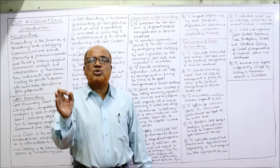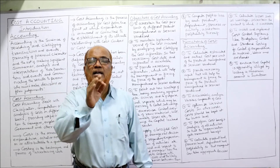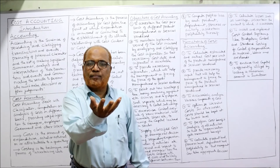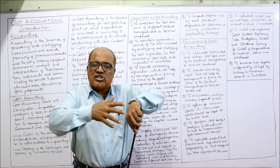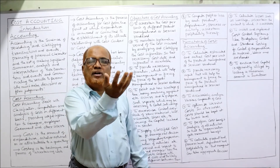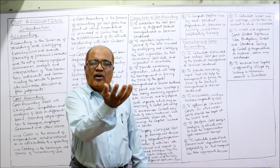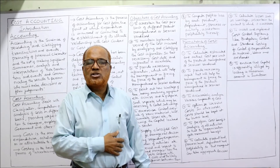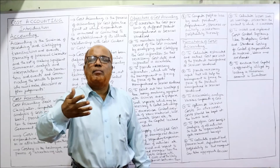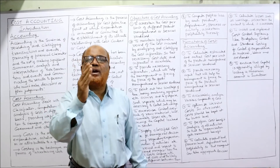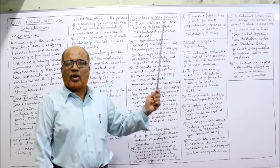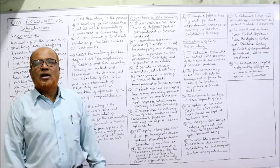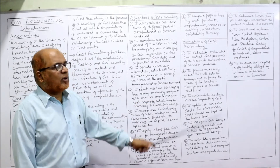The next objective is to compute profit or loss of each product, department, process, or activity. Every business organization wants to find out profitability at different levels — for each department and each product. If a business manufactures different products, what is the profitability of each product and each department or process? In order to find out profitability at different levels, we require cost accounting. These are the objectives of cost accounting.